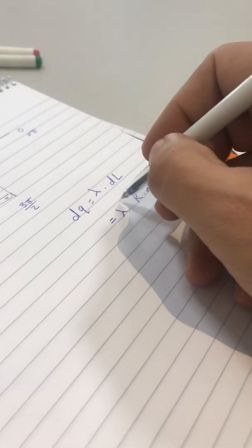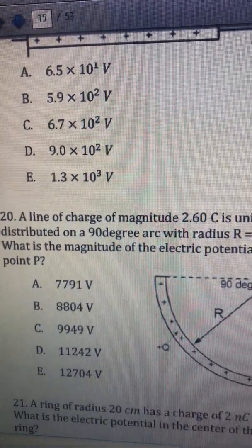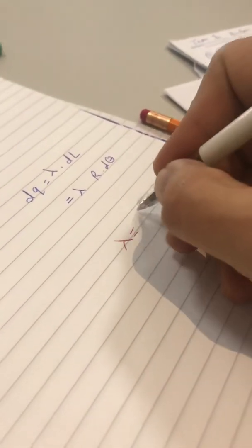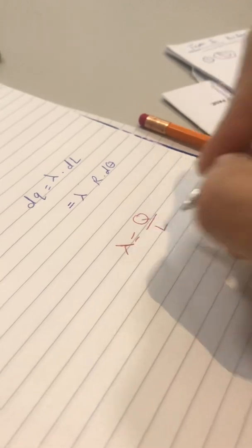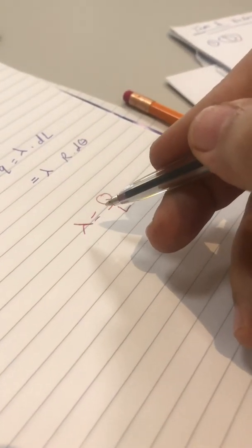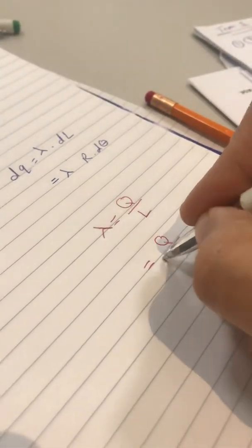Now, we don't have Lambda, and if you notice in the question, they give us the charge KQ. So, we want to find Lambda to substitute it here. Lambda is Q over L. Because, as we mentioned before, Lambda is Q over L. The total charge on the arc is Q.